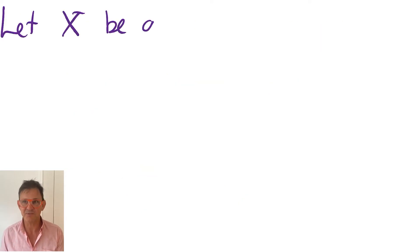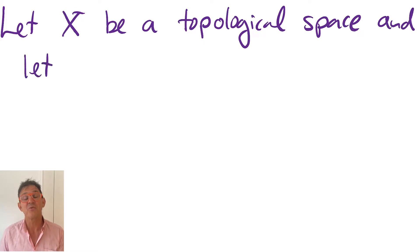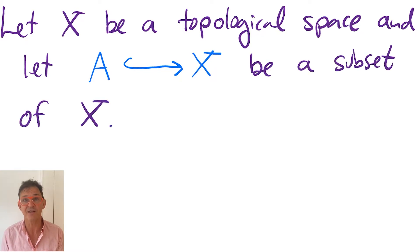So let X be a topological space, and let A be a subset of X. We'd like to make the subset A into a topological space. That is, we would like to specify which subsets of A should be open.